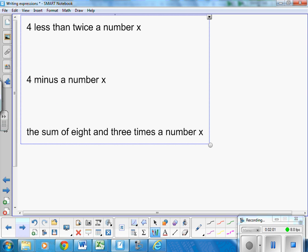Next one. 4 less than. Again, 4 less than. That means I'm subtracting 4 from something. Twice the number x. So that is just 2x and then minus 4.